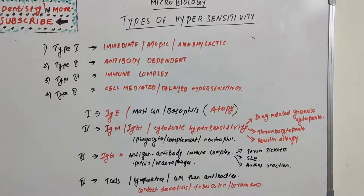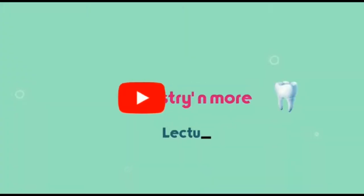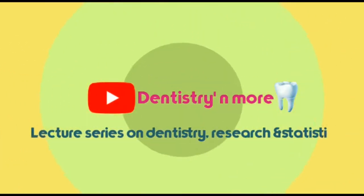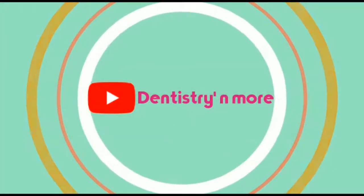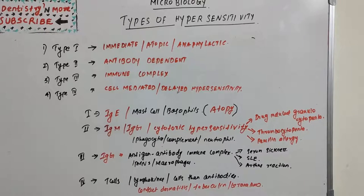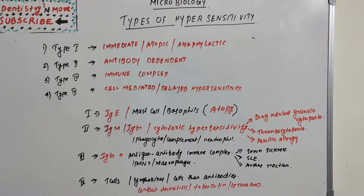These reactions may be damaging, uncomfortable, or occasionally very fatal. Hypersensitivity has four classifications: Type 1 is the immediate or anaphylactic or atopic type; Type 2 is antibody dependent; Type 3 is immune complex type; and Type 4 is cell mediated or delayed type of hypersensitivity.